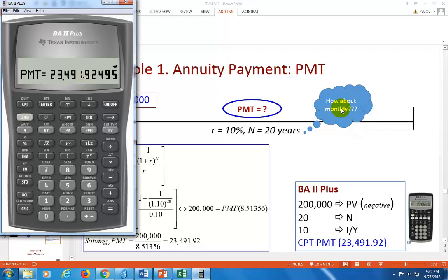And this says, how about monthly? What if you wish to make monthly withdrawals? All you've got to do is simply adjust your input. So 20 years is going to convert to 240 months because 20 times 12 is 240 months, and 10% is going to be divided by 12 to get the monthly rate. So let's do that. Second clear TVM, second clear work.